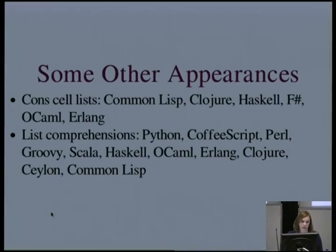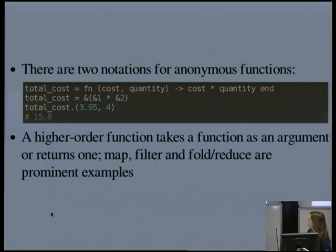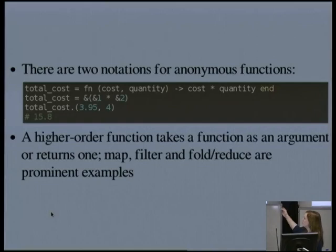Next up: lambdas and higher-order functions — the bread and butter of a functional world. Lambdas are just anonymous functions, and there are two different ways you can write those in Elixir. You can use 'fn' with a right arrow and 'end', or you can use the partial application syntax with an ampersand. When you call anonymous functions in Elixir, you do need to include parentheses and a dot — that's just a quirk of the language.